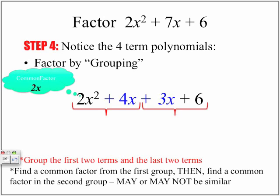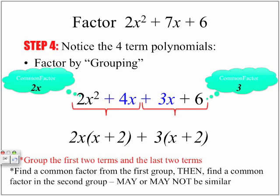The common factor for the first group is 2x — we can factor out 2x from both of those terms. The common factor from the second group is 3. So we factor out 2x from the first group and 3 from the second group. One important thing to keep in mind: after factoring out, the brackets that remain must be the same. If they are not equal, you have factored by grouping incorrectly — it means something else is still factorable, and you have not found the true common factor of each group.